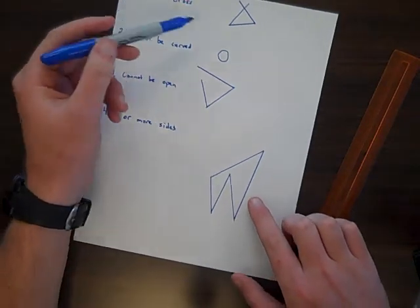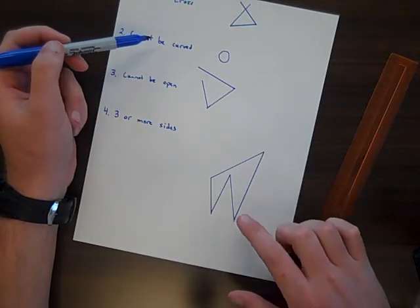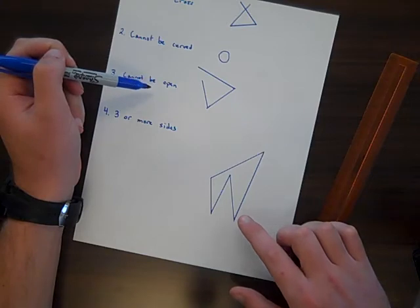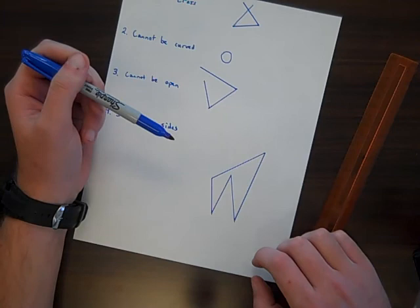Do lines cross? Similar to that. No, they do not. Are lines straight? Yes, they're all straight. There are no curved lines. Is my figure closed? It is closed. And are there three or more sides? Yes, I've got one, two, three, four, five sides to this figure.